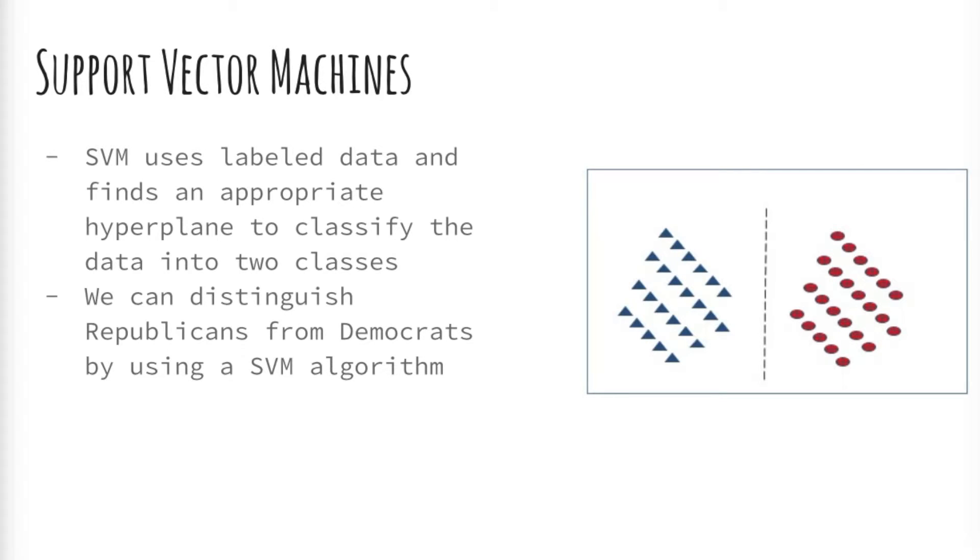Support Vector Machines or SVM uses labeled data and finds an appropriate hyperplane to divide the data into two classes. For example, if we are able to find a hyperplane with a combination of features found in the election dataset we can distinguish supporters of one party from another using SVM. A very simple example is shown in the diagram on the right. We will be looking into more advanced examples and methods of tuning in the upcoming modules of this course.